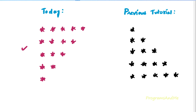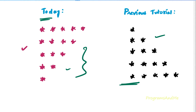In this video series we already discussed a pattern program — printing stars in the right triangle shape. This is also a right triangle shape, but today's pattern is the inverse of the previous pattern. If I flip that pattern downwards, we will get today's pattern.